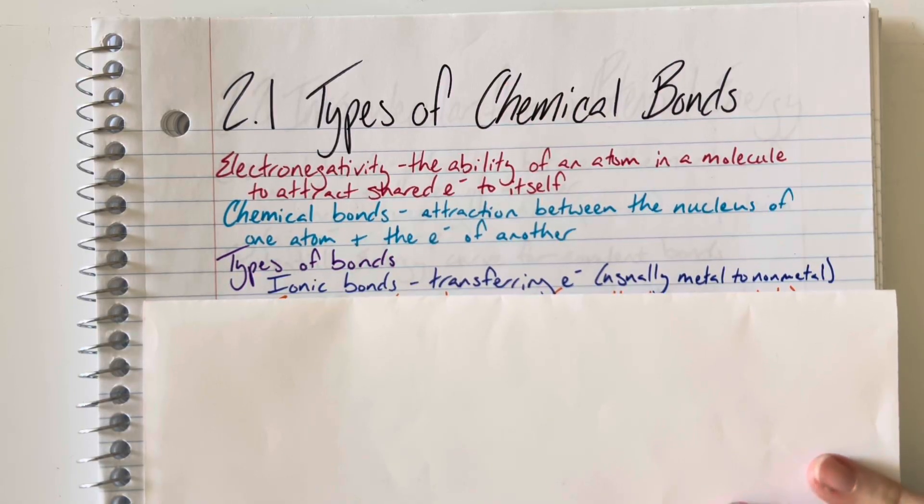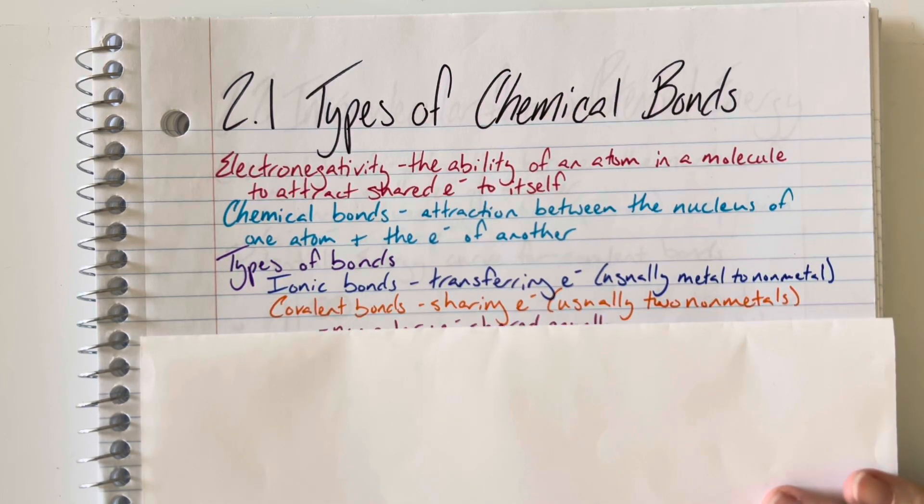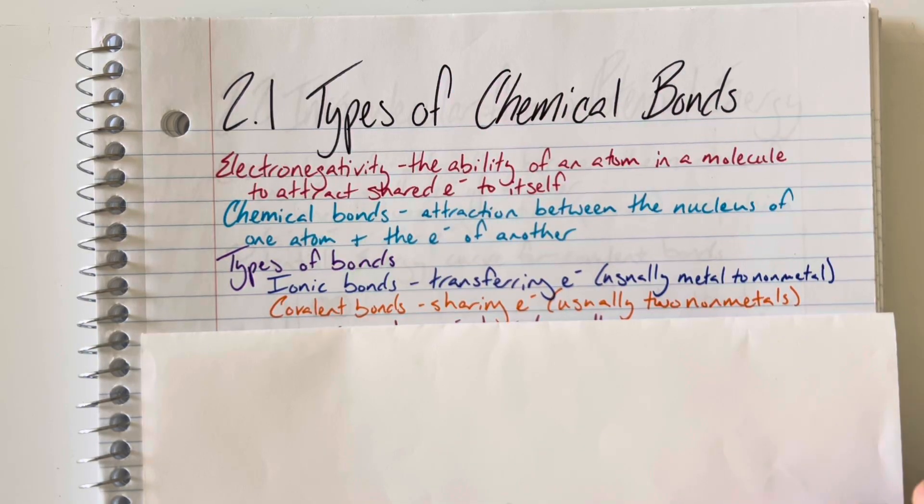The first type of bond is an ionic bond, which involves a full transfer of ownership of an electron, typically from a metal to a non-metal. Covalent bonds, on the other hand, involve sharing of custody of that electron. This is typically between two non-metals.